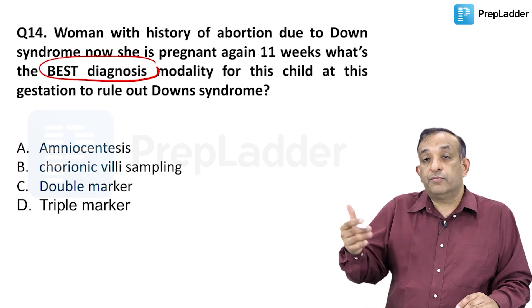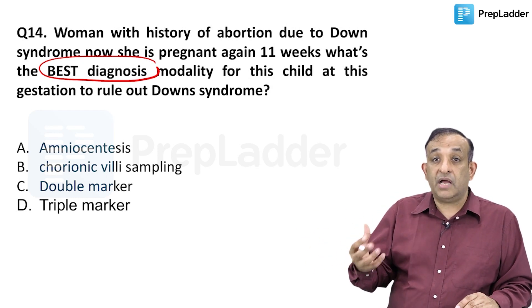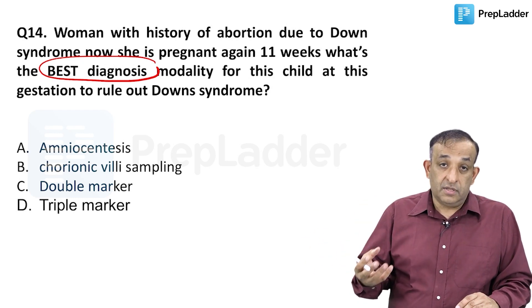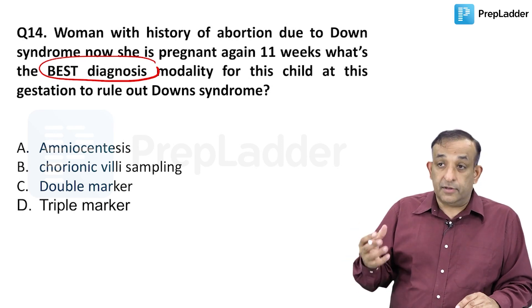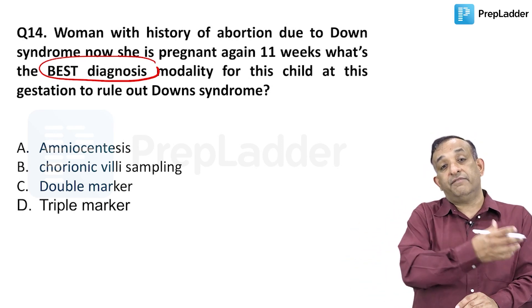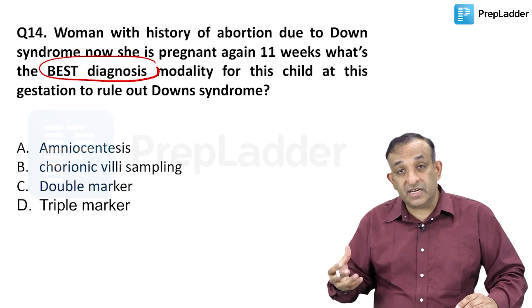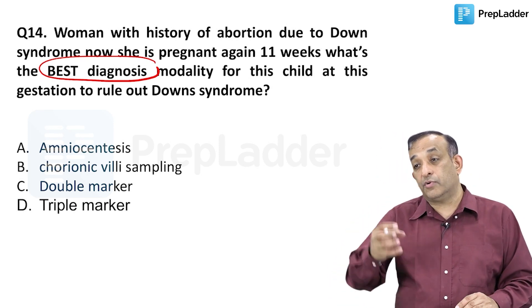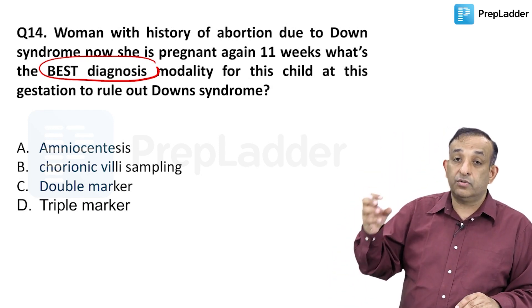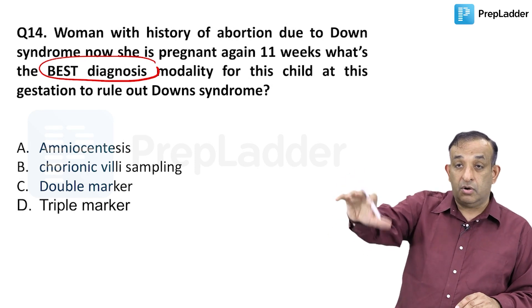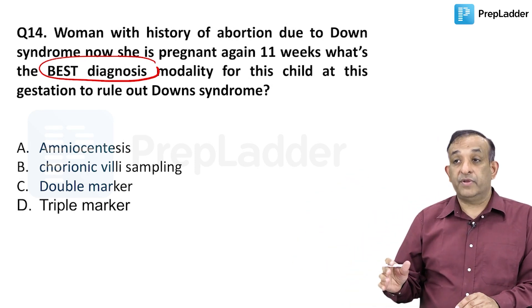We do screening when the woman is at risk. We do a diagnostic test when you have a sure-shot clinical indication. This woman has already delivered a child with Down syndrome, so now I'm not going to screen — I'm going to do a diagnosis to rule it out. I'm going to do a test which is going to tell me for sure: Downs or no Downs.